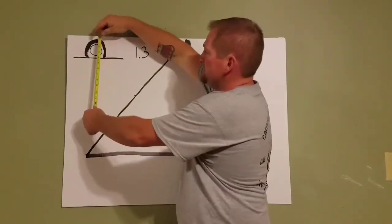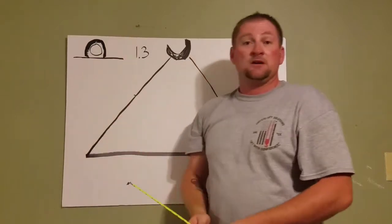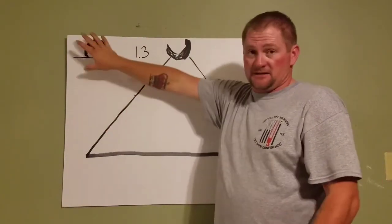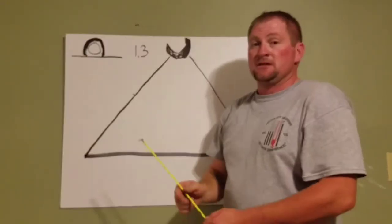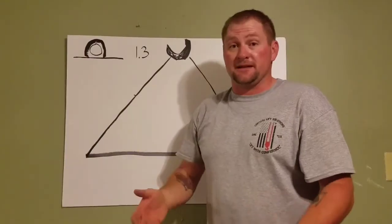Take where your shackle pin meets, measure to the top of the load. In this case it's 2.5 inches. So you just add that to the 10 inches. So in a scenario like this, if it's raised 2.5 inches, you would add that to your 10 inches making it 12.5 inches.